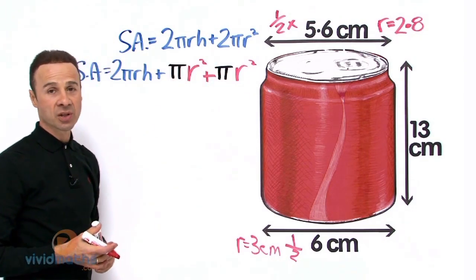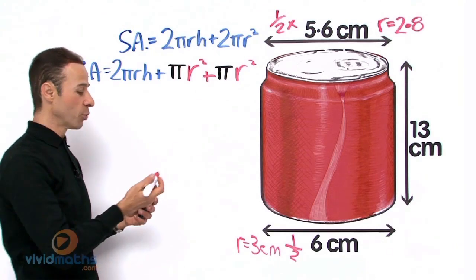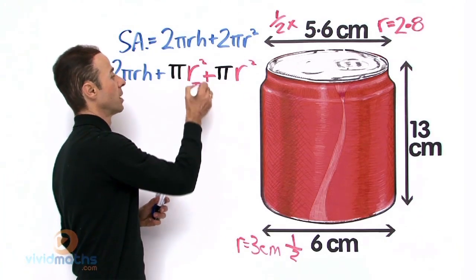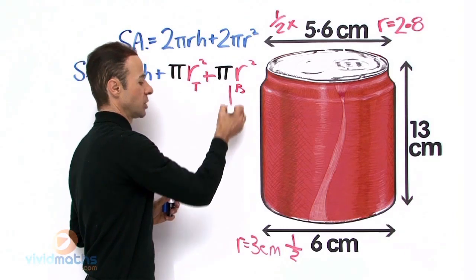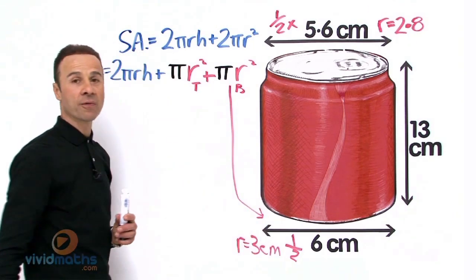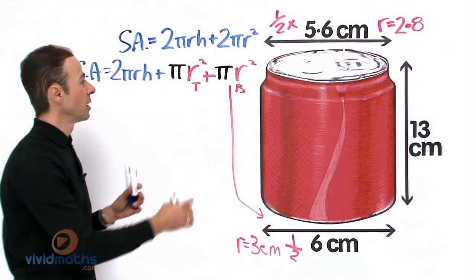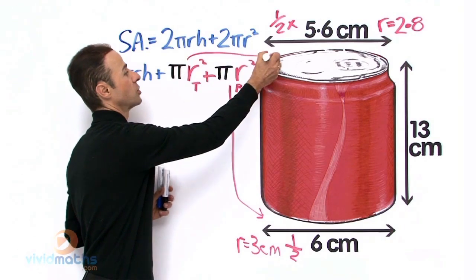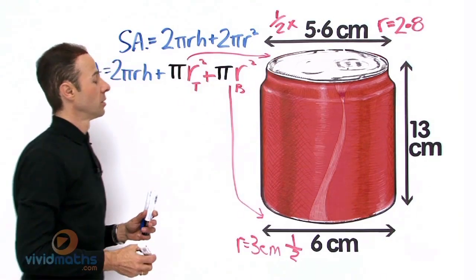So let us have 1 for the top and we will call this one T for the top, and this one B for the bottom. So this one will be the area of the circle or the radius at the bottom, and this one will be for the top up here.